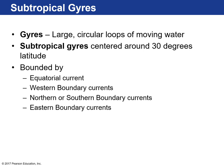Surface currents create gyres — large circular loops of moving water in an ocean basin. For a complete loop, depending on the size of the gyre, it could be anywhere from three years to six to eight years. The ones mentioned — the North and South Atlantic — are subtropical gyres, centered at 30 degrees latitude.